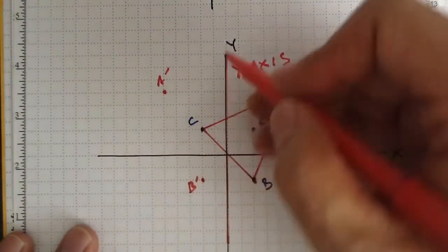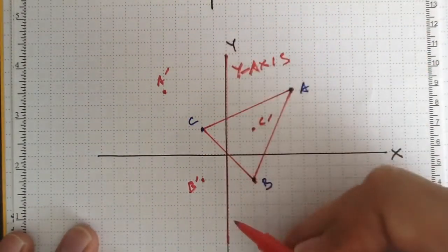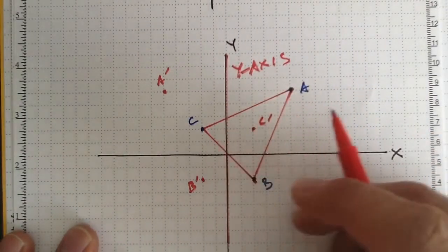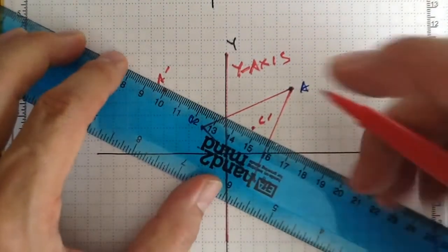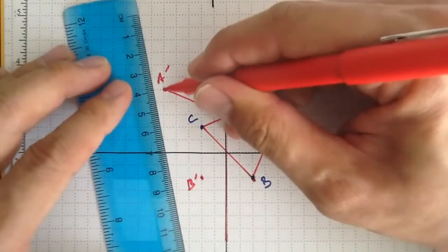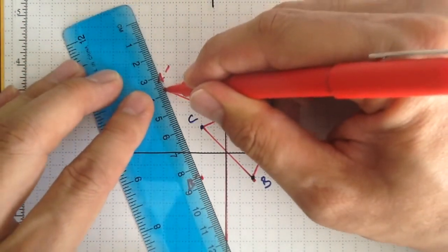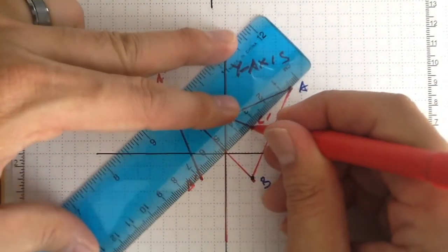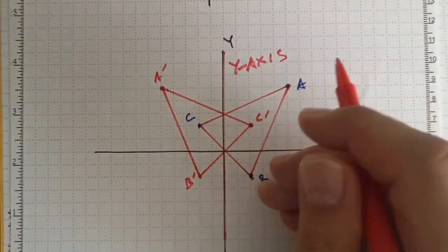Okay, and it always gets a little confusing when your line of reflection, your mirror, is within the object that you're trying to reflect. But once again, if you've done it right and you join all your points up, you should get the mirror image version of the original, and it should be congruent to the original as well.